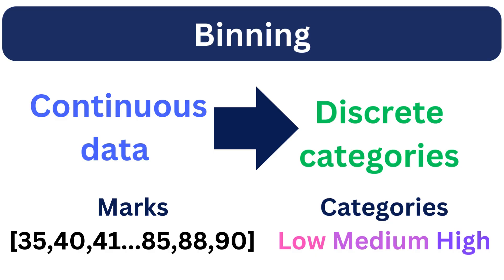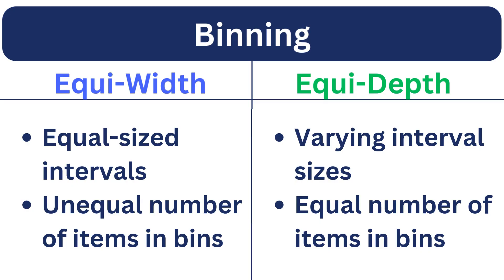For instance, if you have student marks you can divide them into low, medium, and high categories. There are two types of binning methods: equi-width binning and equi-depth binning. Equi-width divides the data into bins of equal width — the range of values is split into intervals of the same size and each bin has a fixed range. Equi-depth divides the data such that each bin contains an approximately equal number of data points; the width of the bins can vary depending on the data distribution, but the goal is to have the same number of instances in each bin.